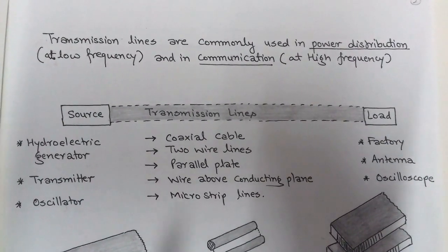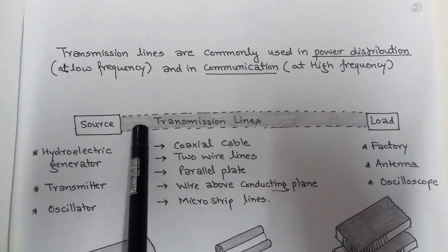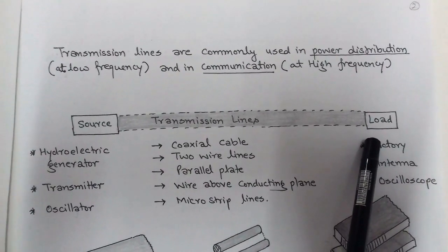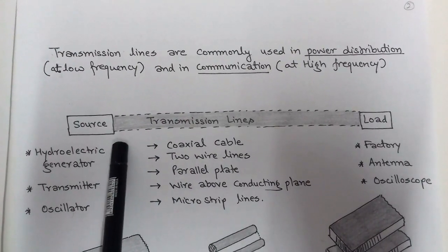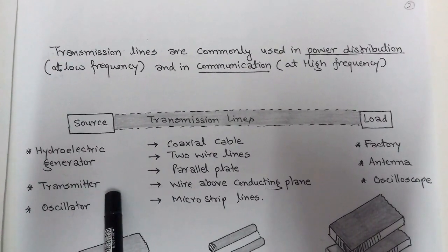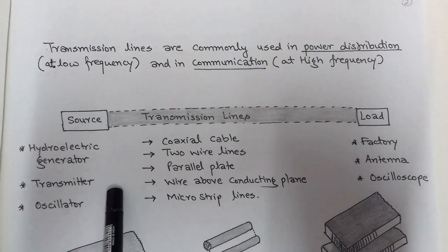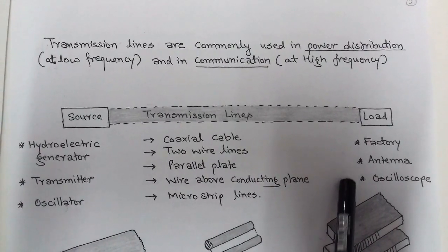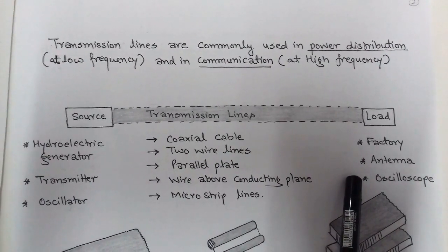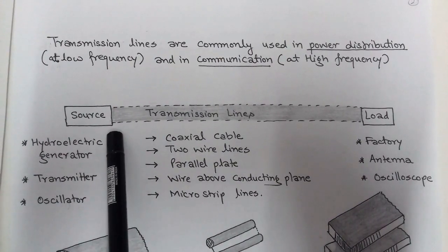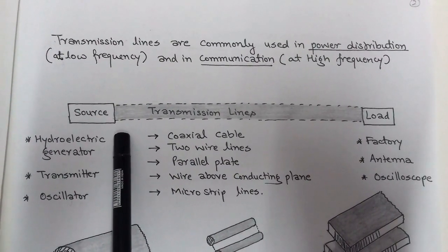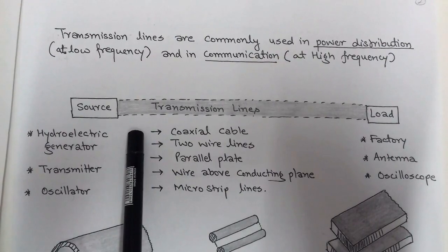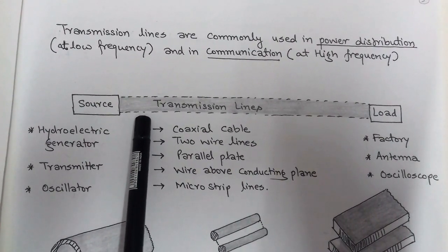The transmission line is a medium which connects a source to a load. Examples of sources include hydroelectric generators, transmitters, and oscillators, while examples of loads include factories, antennas, and oscilloscopes. These sources and loads are connected with the help of transmission lines.